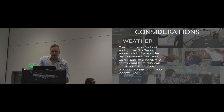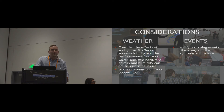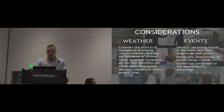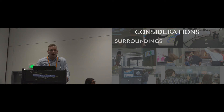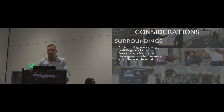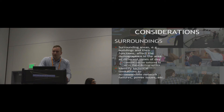Weather also affects people flow and the amount of people in the area. For events: identify upcoming events in the area and be aware of their magnitude and nature; design the deployment to handle large crowds even if not normally present; and consider turning events to the deployment's advantage, for example by tailoring content to serve event participants. For surroundings: identify key locations such as theaters and malls, consider how they affect demographics at different times of day, and identify technical limitations to accommodate network failures, power issues, and other factors often taken for granted.